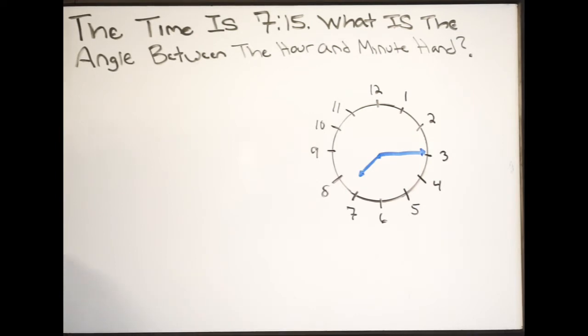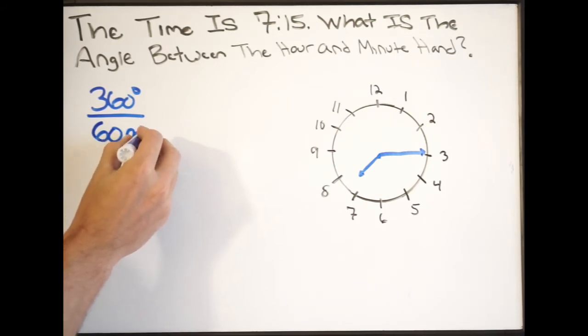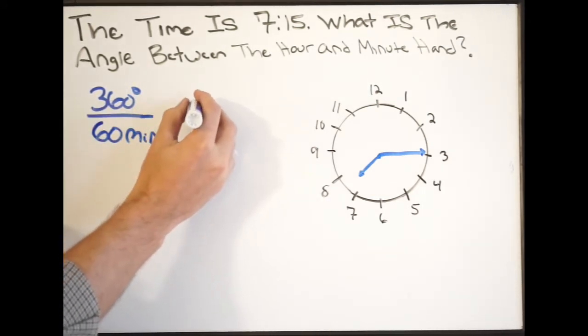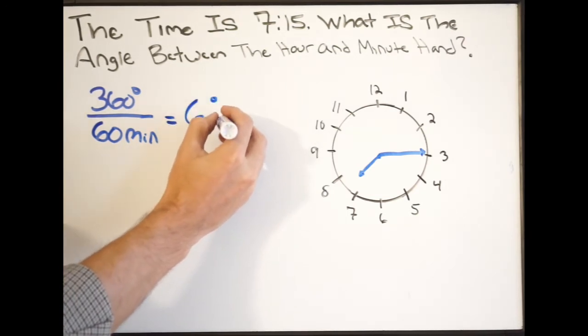So there are 360 degrees in one full revolution, and we just determined that there are 60 minutes as well in one revolution. So this will give me degrees per minute, how many degrees there are for every minute. So if I do this out, you're going to get 6 degrees per minute.